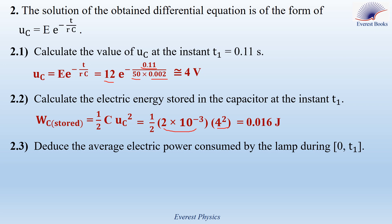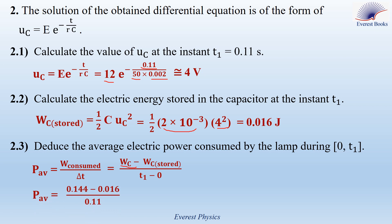Part 2.3: deduce the average electric power consumed by the lamp during the time interval 0 to T1. The average power equals the energy consumed over the time interval delta T. The energy consumed by the lamp equals the energy delivered by the capacitor, which equals Wc minus Wc stored, where Wc is the energy stored at the beginning of the discharging process. Wc equals 0.144 joules and Wc stored equals 0.016 joules, with T1 equal to 0.11 seconds. So the average electric power consumed by the lamp equals 0.164 watts.